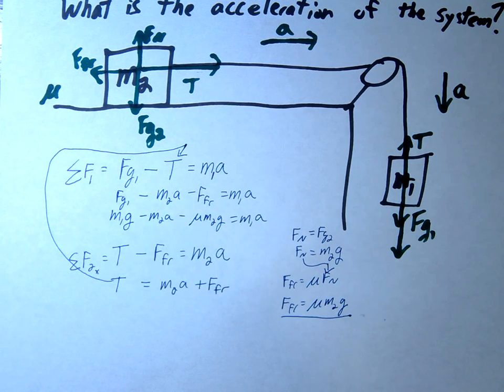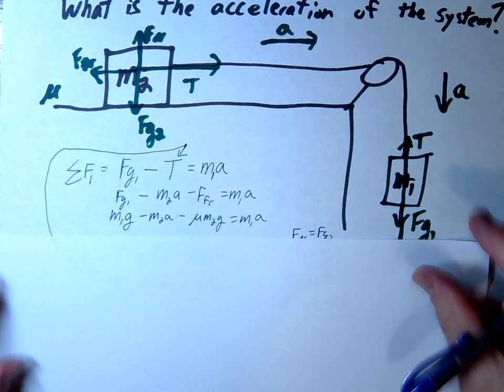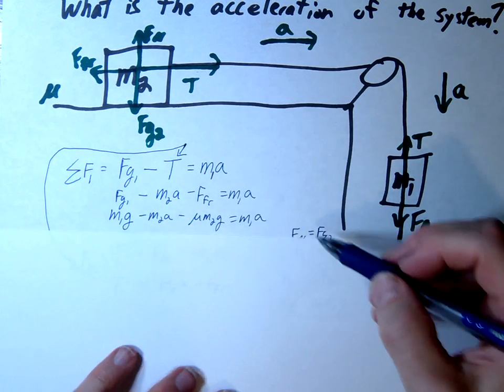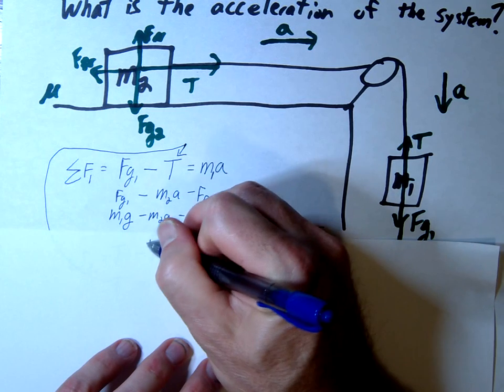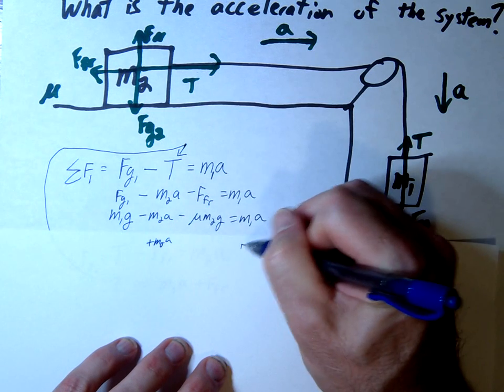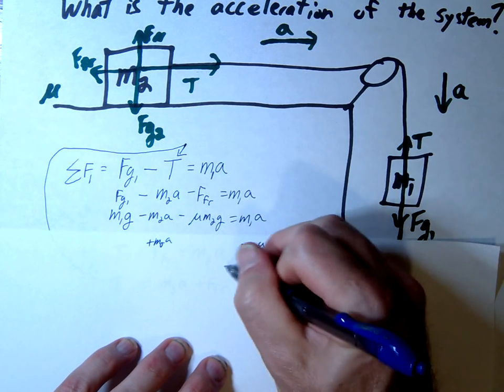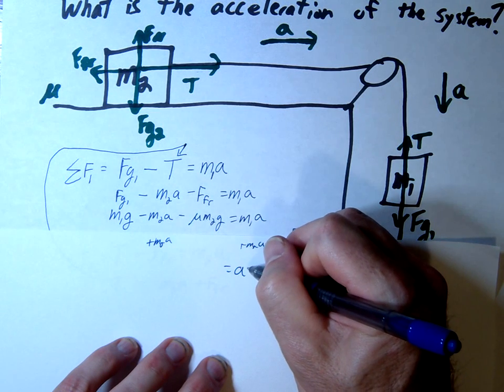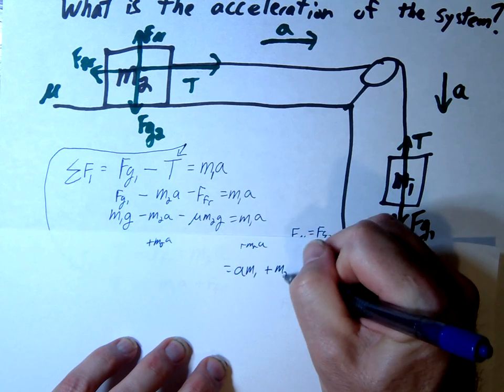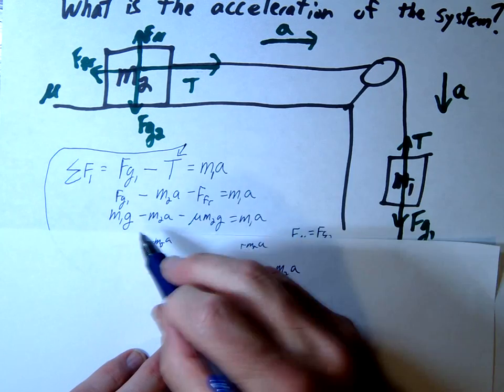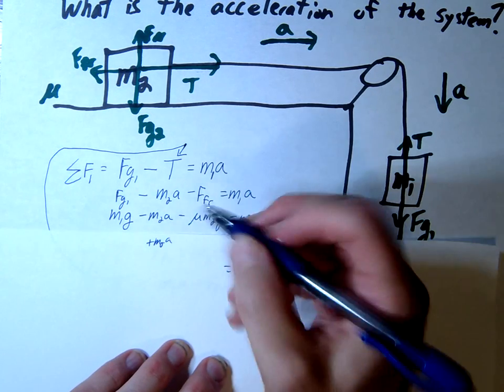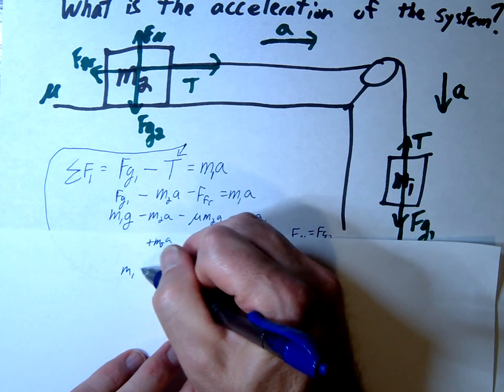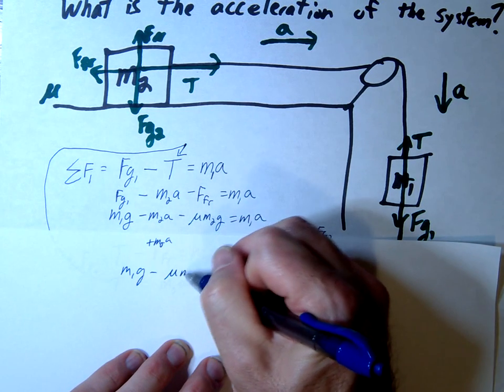Now we'll finish the algebra. We need to get all the a terms on one side. Adding m2a to both sides gives us m1a plus m2a equals m1g minus mu times m2g.